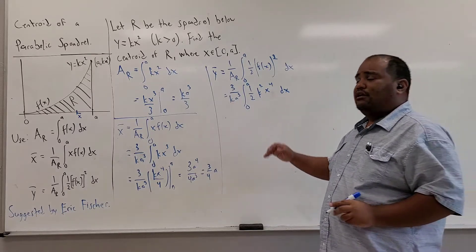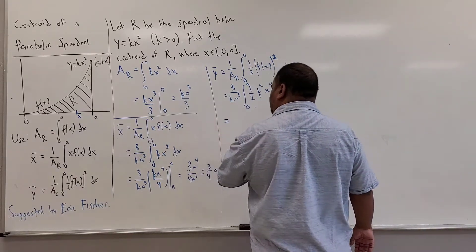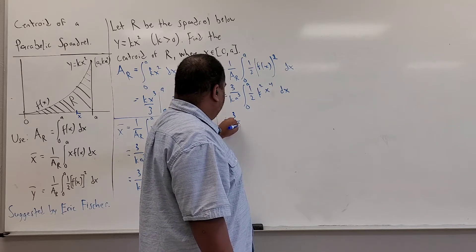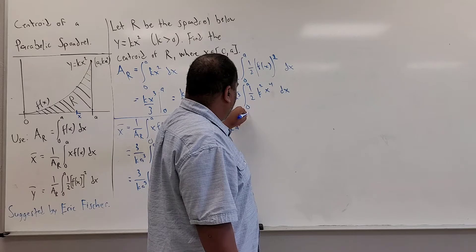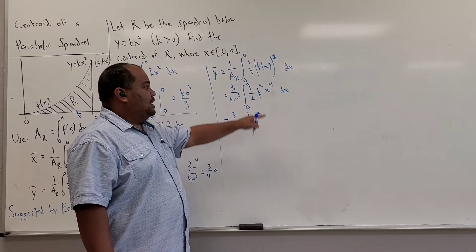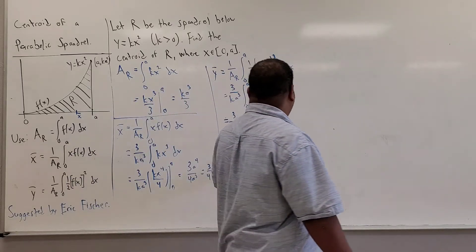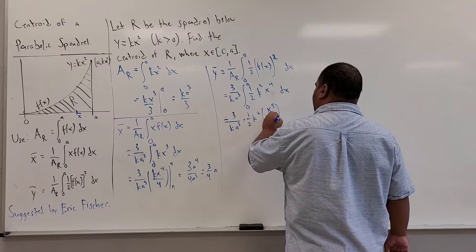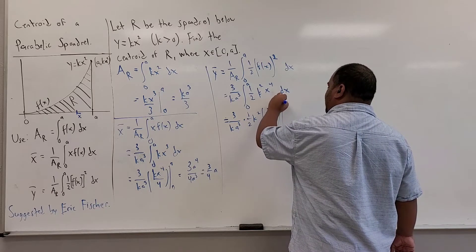And now we'll clean up and do the integration. So first we have this factor here, 3 over k a cubed times a 1 half k squared from this part here. And of course, x to the fourth from our power rule is x to the fifth over 5 once we integrate, evaluating between a and 0.